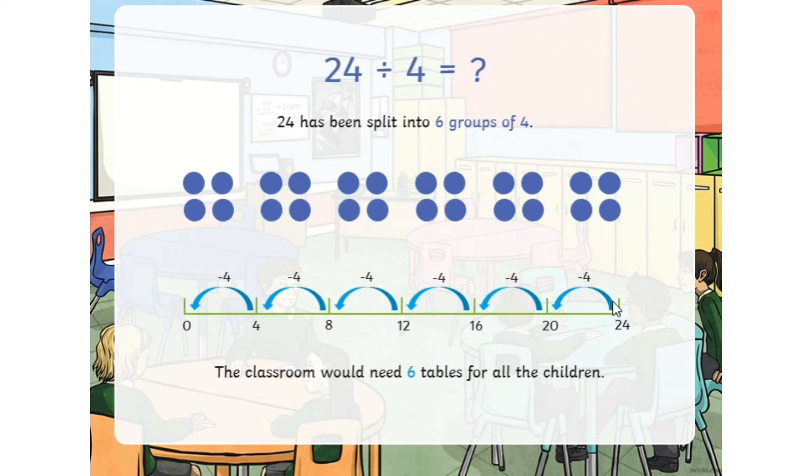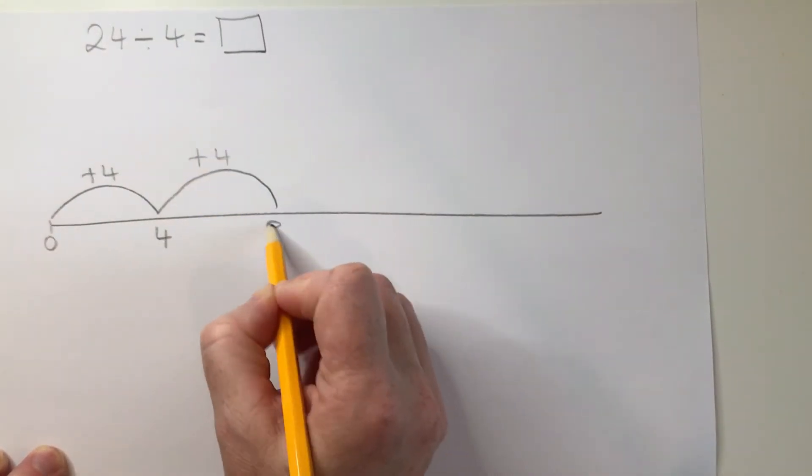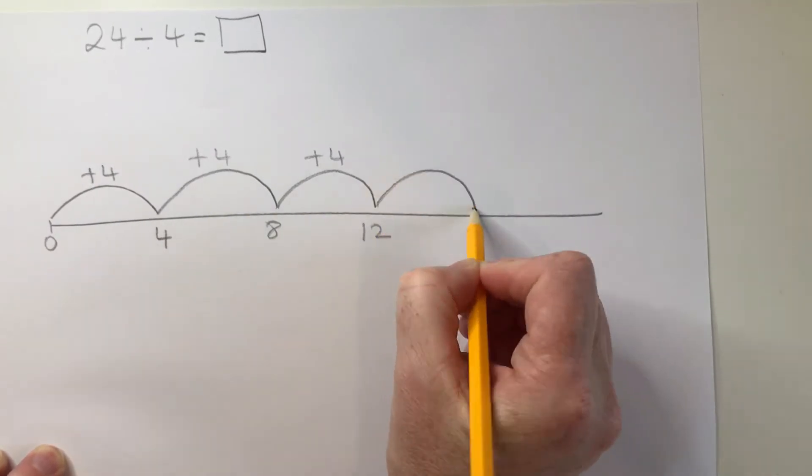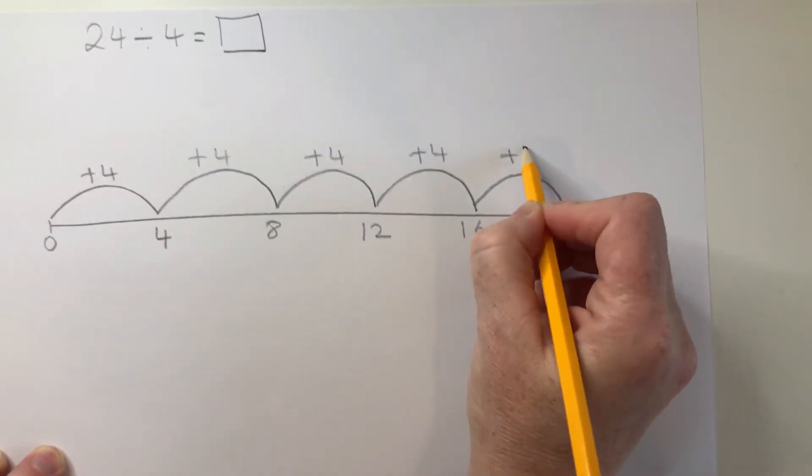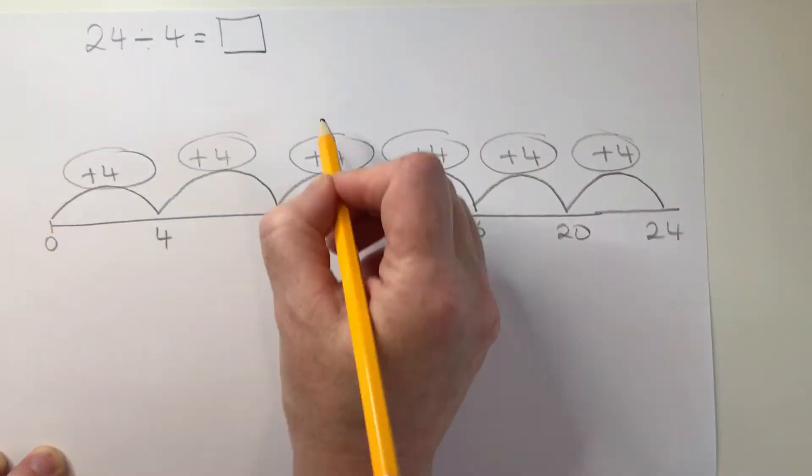Using the number line, these groups can be shown by jumping back from 24, taking away four each time. Or it could be shown as jumping up in groups of four from zero to figure out how many groups of four are in 24. The answer would be six groups of four or six tables of four in this instance.